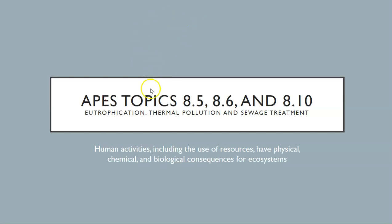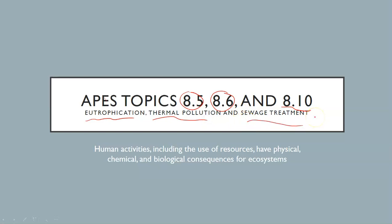Welcome back everybody for another exciting installment. Today we're going to be looking at unit 8 topics 8.5, 8.6, and 8.10, which are Eutrophication, Thermal Pollution, and Sewage Treatment. The enduring understanding that accompanies this unit is that human activities including use of resources have physical, chemical, and biological consequences for ecosystems.